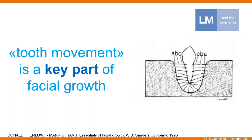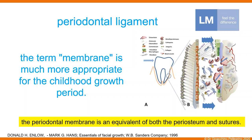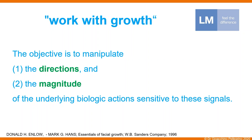During this period I want to remind us that tooth movement is a key part of actual growth. Normally we consider teeth important but not so important for general growth. However, as research showed several years ago, the movement of the teeth is really very important during growth, and the periodontal ligament is really very important — this structure gives its contribution to growth. Perhaps we can say that the periodontal membrane is an equivalent of both a periosteum and a suture, so it is a very important center of growth.